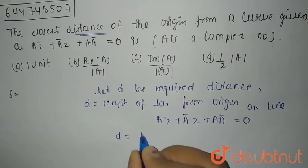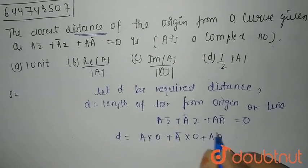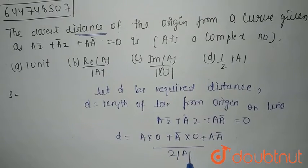d that is distance formula is a into 0 plus a bar into 0 plus a a bar divided by 2 of a bar.